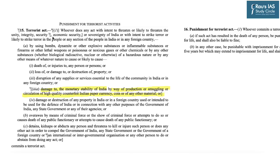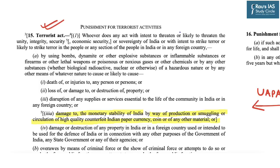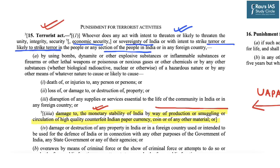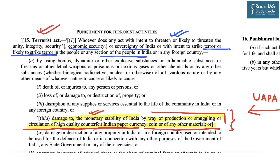Counterfeiting has also been described as a terrorist act under the UAPA, that is the Unlawful Activities Prevention Act. Whoever does any act with intent to threaten the unity, integrity, security, economic security or sovereignty of India, or with intent to strike terror in the people of India or any foreign country, by means including damaging the monetary stability of India through production, smuggling or circulation of high-quality counterfeit Indian paper currency, coin or any other material — such an activity will be considered a terrorist act as per UAPA.